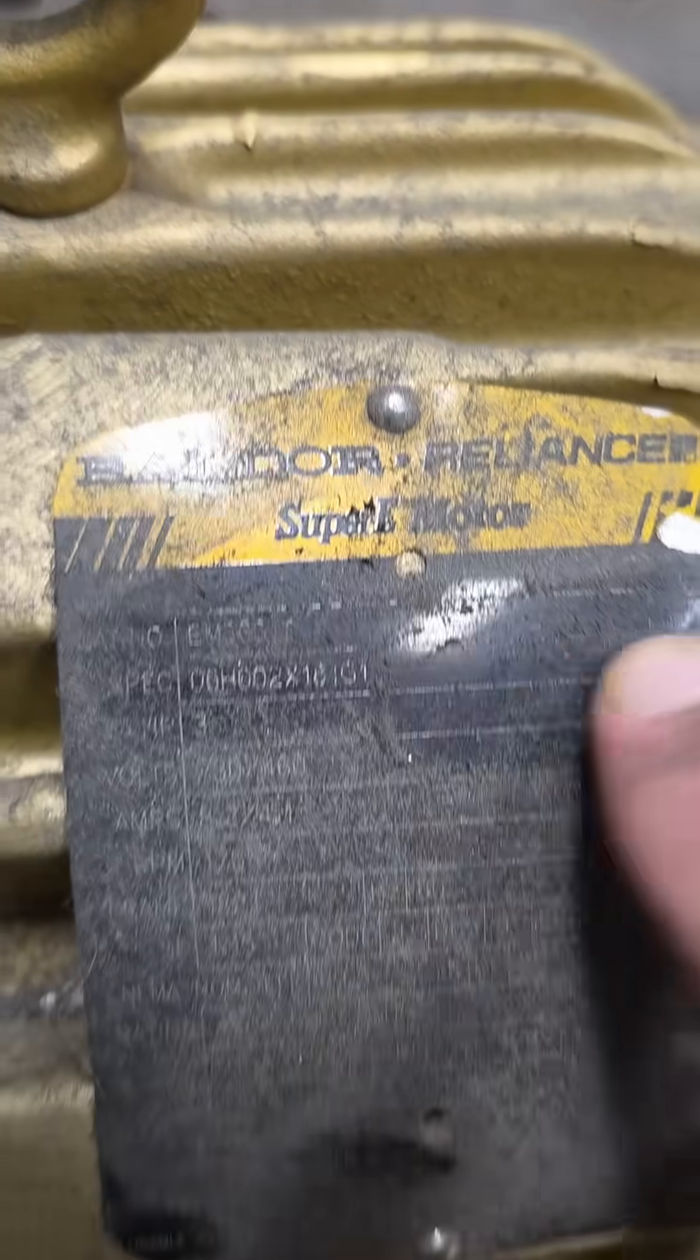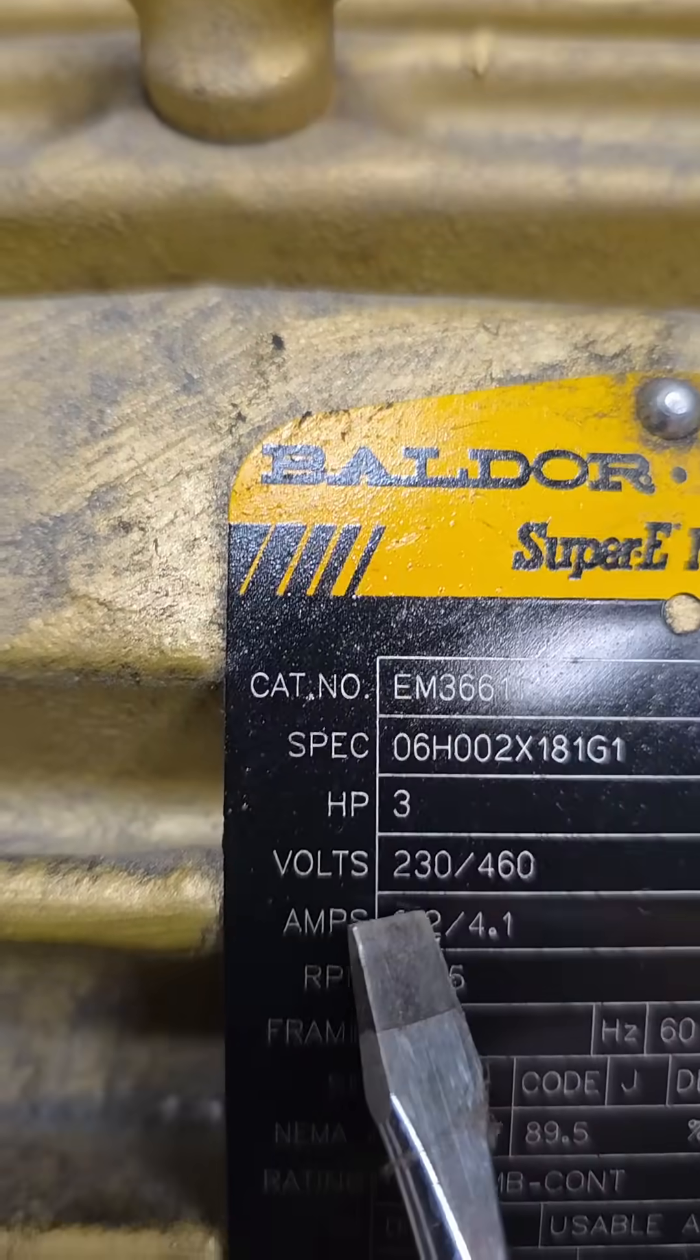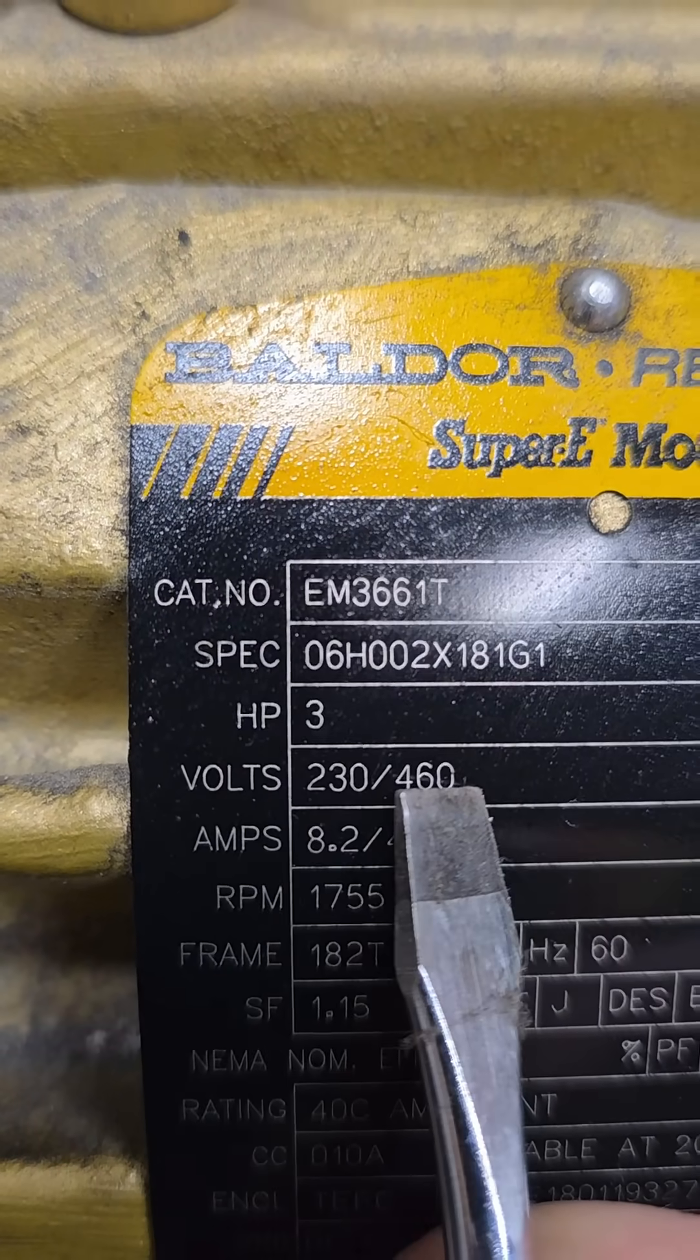Well, how do I know what's high and low voltage? Well, that's a good question, and that's where your nameplate comes in. So right here under volts, my nameplate will say 230 and 460. So I automatically assume that the lower number is the low voltage and the higher number is the high voltage.